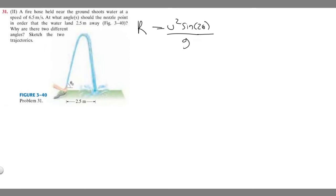So let's just plug everything in and solve. So R is your change in x. So 2.5 equals u, which is your velocity. So in this case, it's going to be 6.5 squared times the sine of 2 theta divided by g. And so g is just the force of gravity on Earth, which is 9.8 meters per second squared.